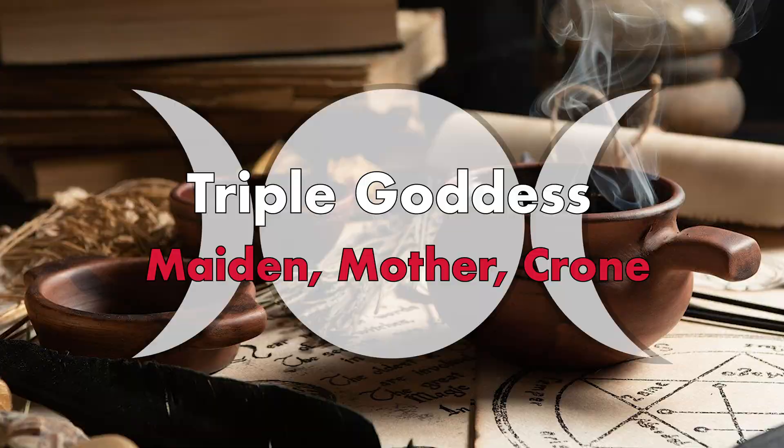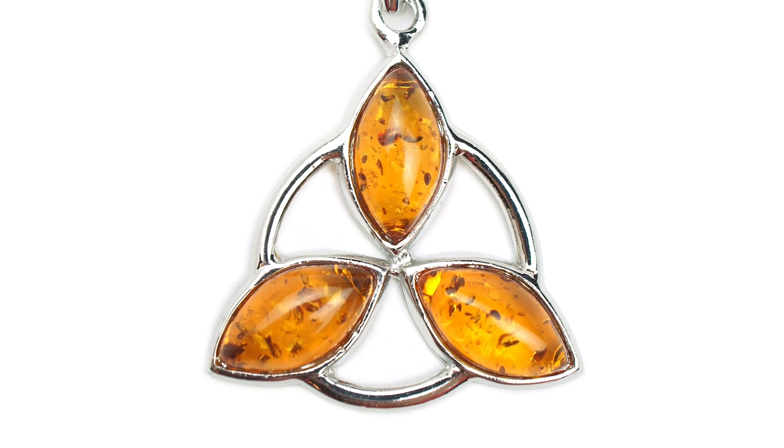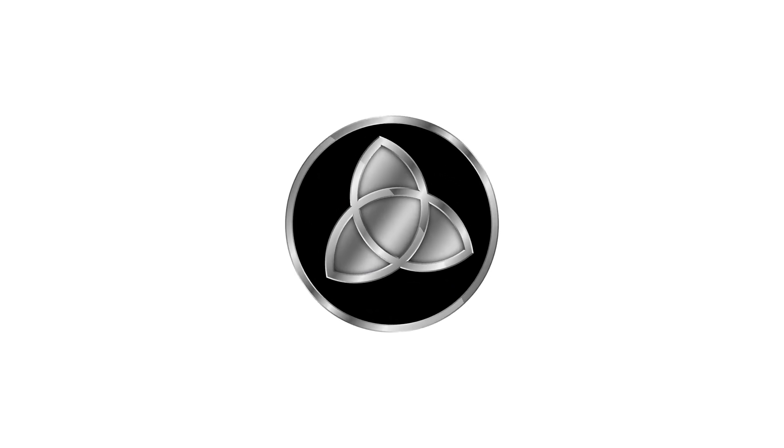In the Slavic tradition, it is believed that if you wear the symbol of the triquetra, you can protect your aura from the evil eye.